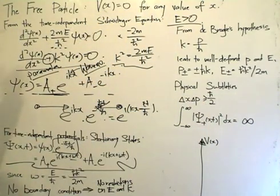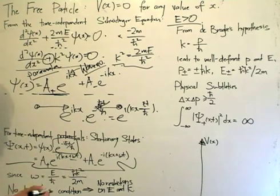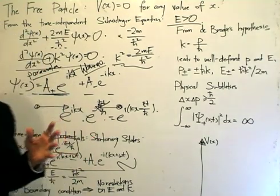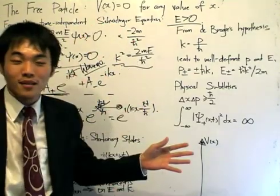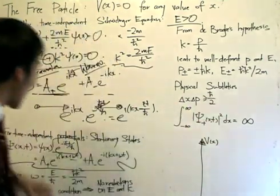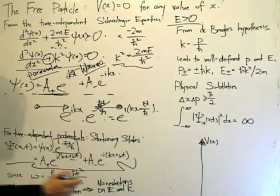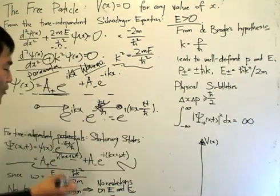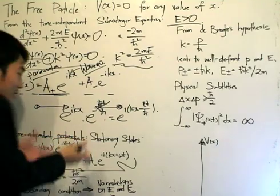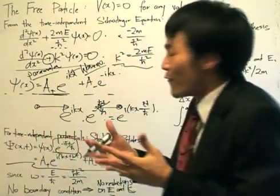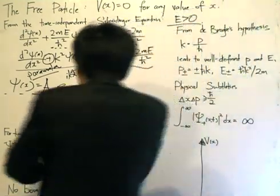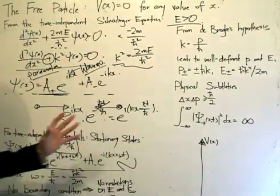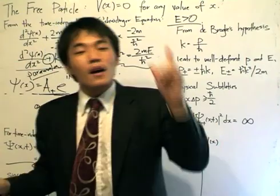Since it's a free particle with no potential, there are no boundary conditions. The boundary conditions are the continuity equations that occur at boundaries where the particle's motion decays. Without a potential, the motion doesn't decay, so there are no boundary conditions. This also means there are no restrictions on the energy or the wave number k. This is the complete solution — the free particle is easy to solve mathematically, though not easy to understand physically.